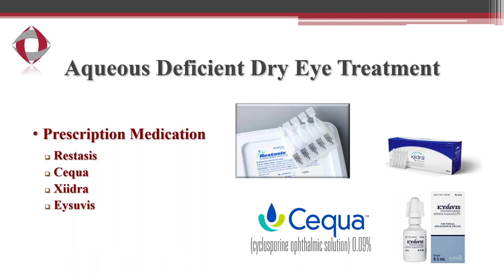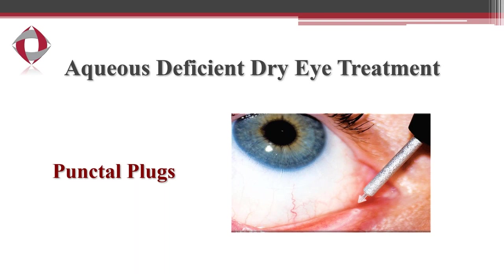Moving on to prescription medications — you may have heard of Restasis, Sequa, and Xiidra. These prescription medications are aimed at increasing the body's natural tear production. They have anti-inflammatory properties and increase tear production over time, typically taking about four to six weeks to work, but they're meant to be taken long-term. Most recently we have Eysuvis, a topical steroid drop with a very good safety profile. This drop is helpful for patients who struggle seasonally with dry symptoms — we can put these patients on it for about four to six weeks, get their symptoms under control, and then they can manage with over-the-counter artificial tears and supplements the rest of the year.